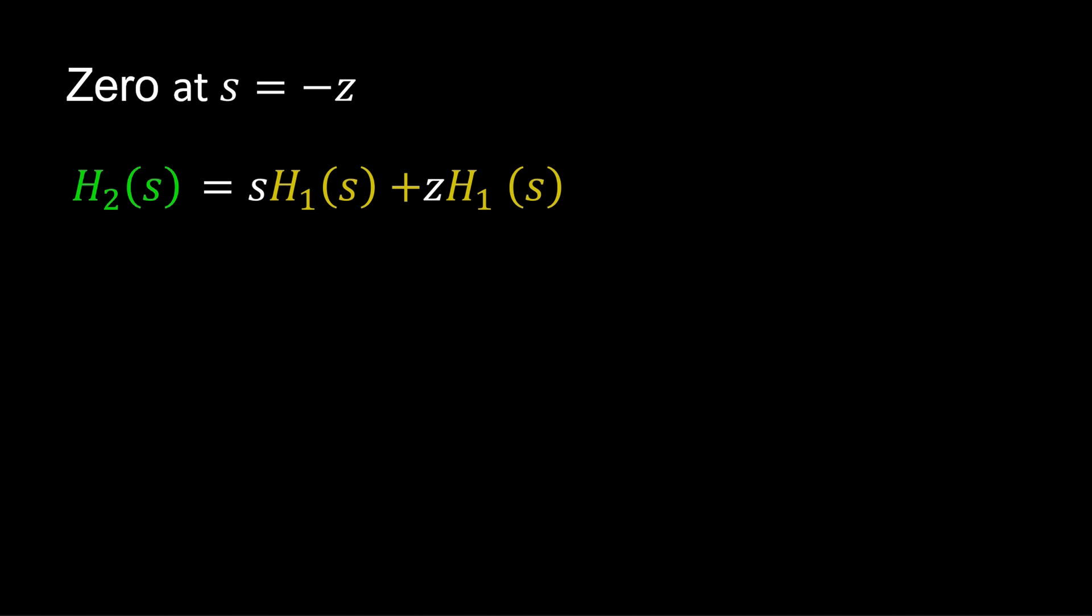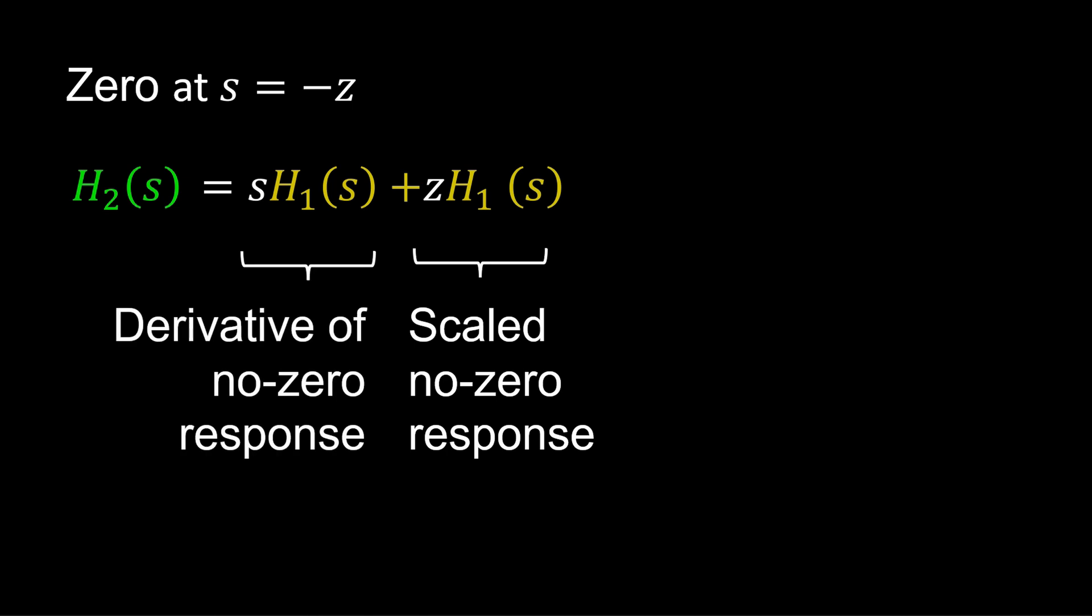Note the transfer function H2 is now expressed as a function of H1. The effect of the zero is to scale the no zero response, and add to it the derivative of the no zero response.